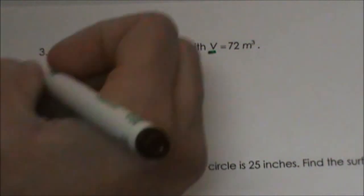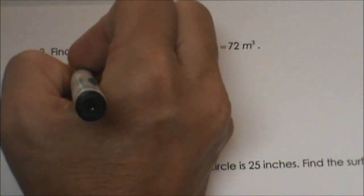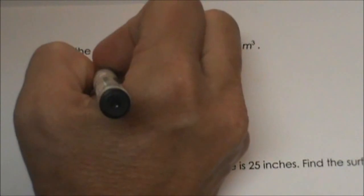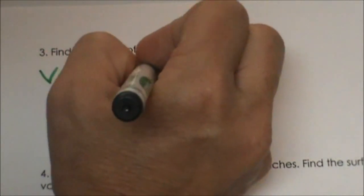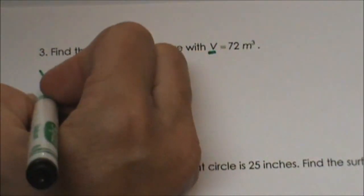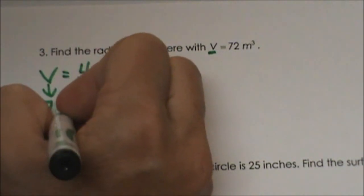We have the volume. We know the volume formula is equal to 4 thirds pi r cubed. We know the volume is 72 so right here I am going to plug in 72.